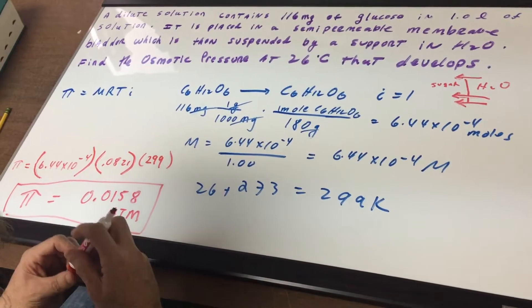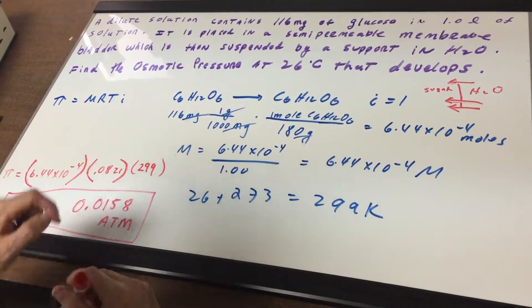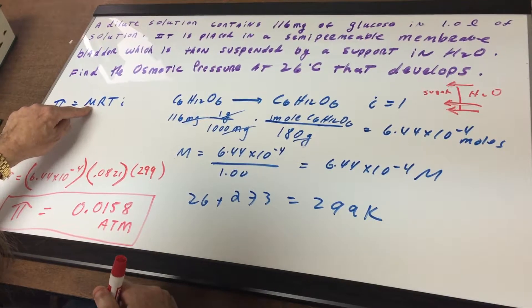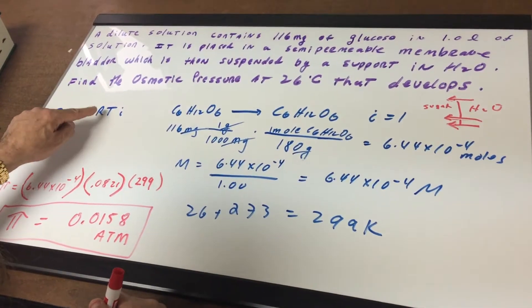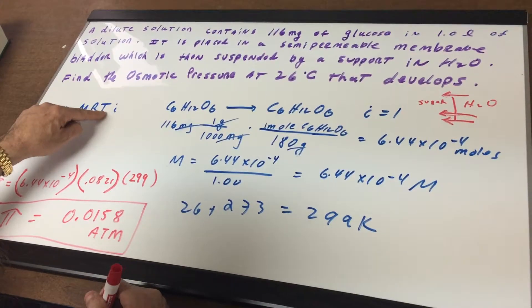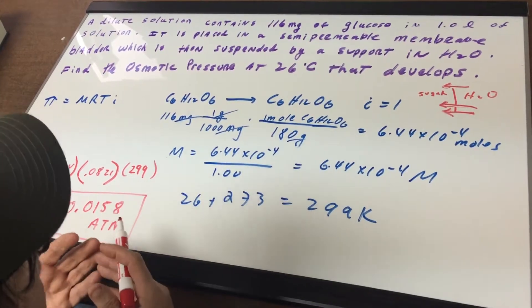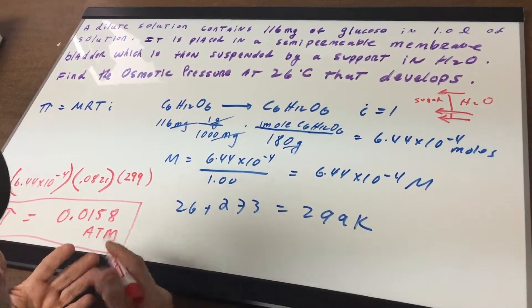The first thing we're going to do is write down the formula for osmotic pressure. Pi is the symbol for osmotic pressure. M is for molarity, which is the moles per liter. R is the gas constant which they'll give you. T is the temperature in Kelvin, and i is the Van't Hoff factor, which represents the number of particles that can theoretically dissociate.